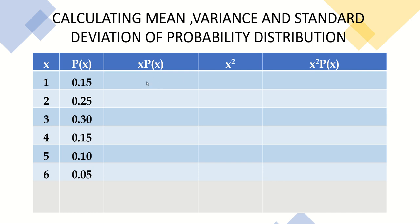Let us now complete the table. First, we compute x·P(x), the product of x and P(x): 1 × 0.15 = 0.15; 2 × 0.25 = 0.50; 3 × 0.30 = 0.90; 4 × 0.15 = 0.60; 5 × 0.10 = 0.50; and 6 × 0.05 = 0.30.